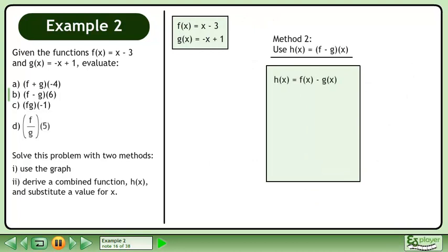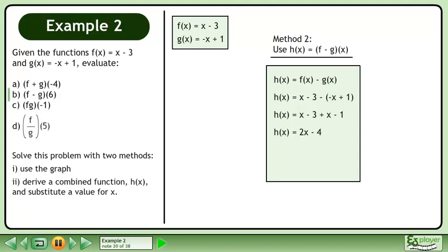Now solve the problem algebraically by finding a function h that is the difference of functions f and g. Replace f with x minus 3 and replace g with negative x plus 1. Distribute negative 1 through the brackets and collect like terms to get h equals 2x minus 4. Now evaluate h at 6 to get 8. This matches the result we obtained from the graph earlier.